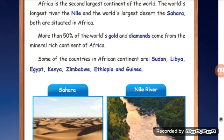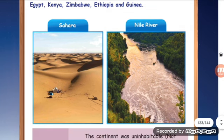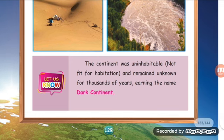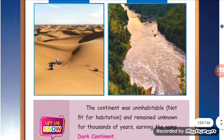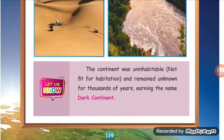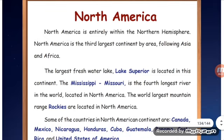Some of the countries in the African continent are Sudan, Libya, Egypt, Kenya, Zimbabwe, Ethiopia, and Ghana. One continent was uninhabitable — not fit for habitation — and remained unknown for thousands of years. Next is North America. North America is entirely within the northern hemisphere and is the third largest continent by area, following Asia and Africa.